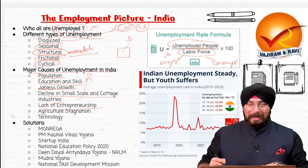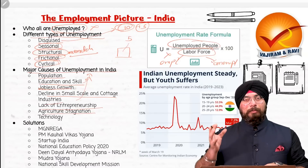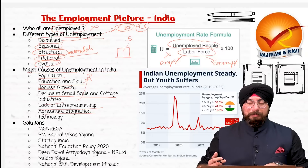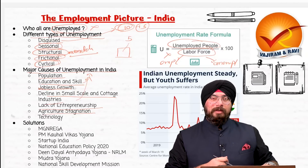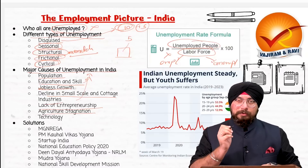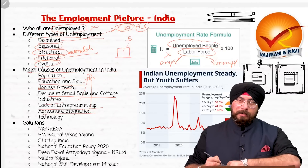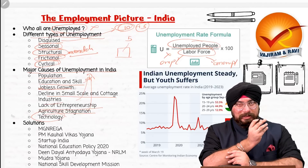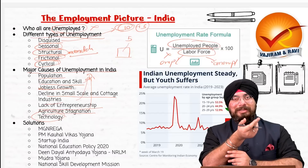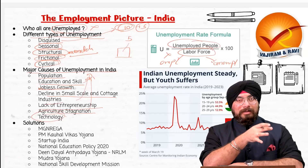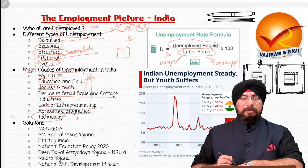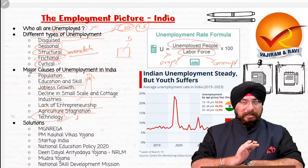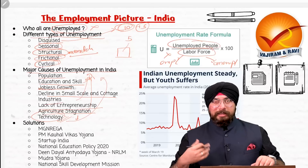Then agricultural stagnation. Agriculture employs the maximum number of people — more than 50-60% of the population is dependent directly or indirectly on agriculture. Because of stagnation and reduction in the productivity of agriculture, the unemployment issue still persists. Then technology is also a reason — because of the presence of artificial intelligence, robotics, computers, and machines, the demand for labor has come down. Many scholars believe that because of high-tech technologies and lower skill among people, the problem of unemployment is increasing day by day.